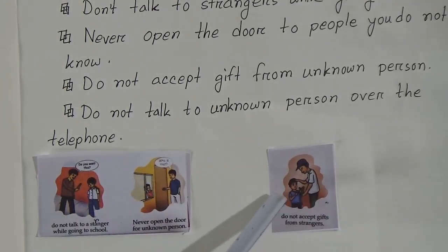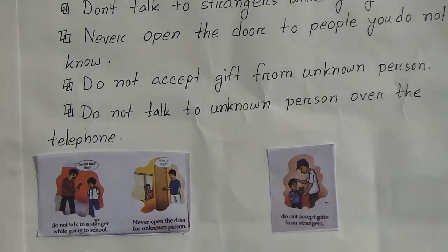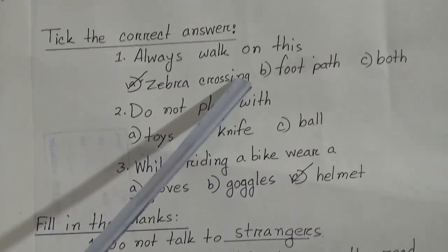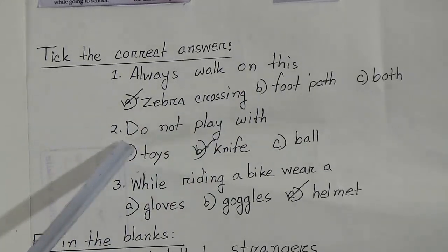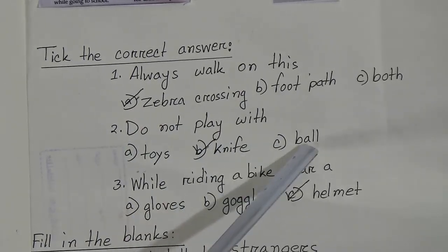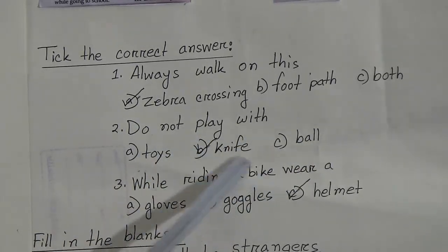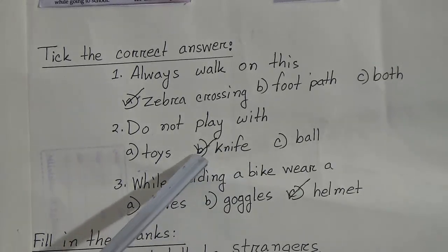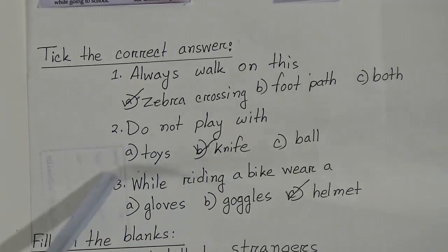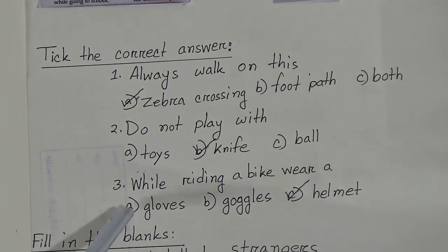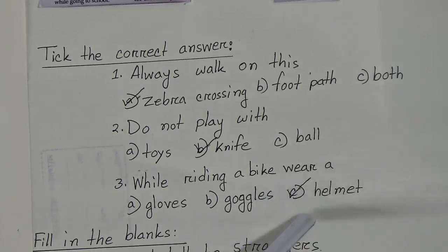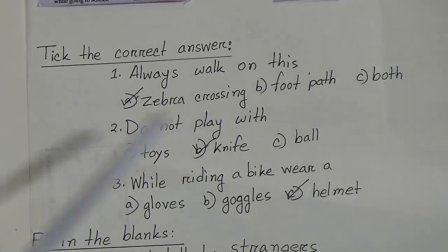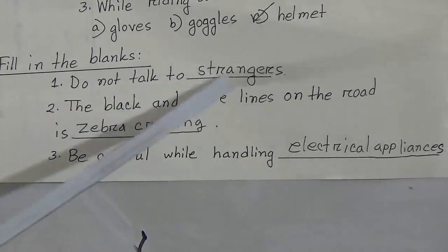Now we will do some exercises based on this chapter. First, tick the correct answer. Question 1: always walk on — options are zebra crossing, footpath, or both — the answer is footpath. Question 2: do not play with — options are toys, knife, or ball — the answer is knife, because it is a sharp object that can cut your finger. Question 3: while riding a bike, wear — options are gloves, goggles, or helmet — the answer is helmet.